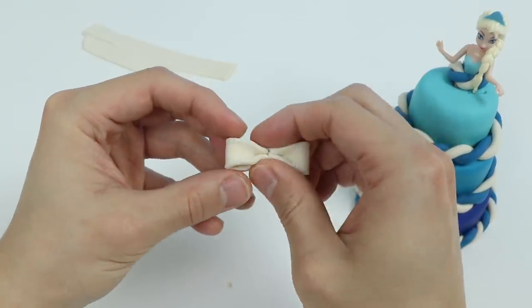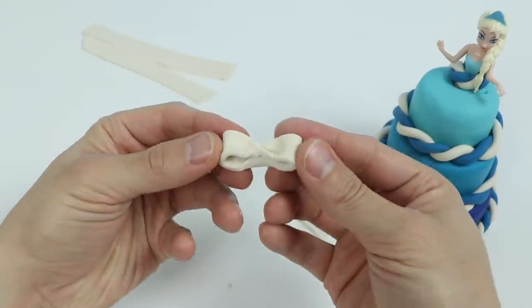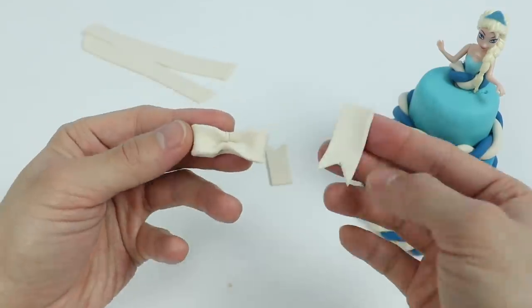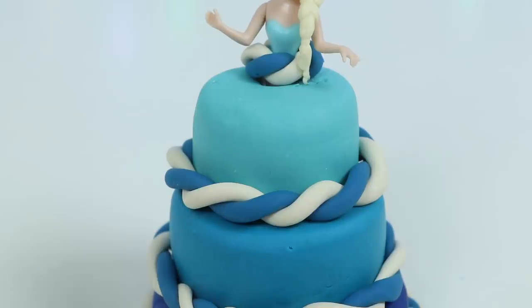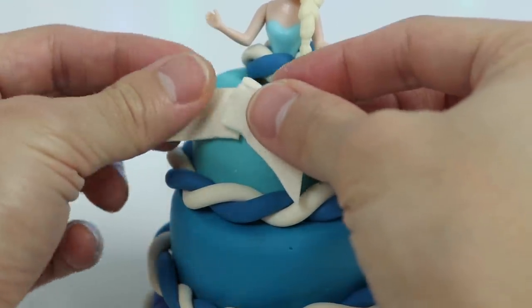All right! Now let's shape this a bit because we'll be making a bow. Perfect! So we just made a white ribbon bow with Play-Doh. Now let's attach the ribbon bow onto the cake.